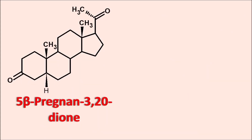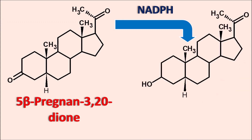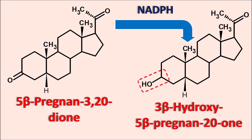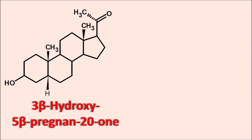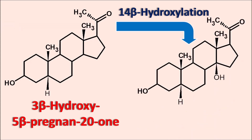The double bond is now saturated at the fourth position. The next step is reduction of the keto group at the third position. This intermediate undergoes reduction by NADPH to give a new intermediate with an OH group at the third position in beta configuration, which is 3-beta-hydroxy-5-beta-pregnan-20-one. The next modification is introduction of a hydroxyl group at the 14th position. This intermediate undergoes 14-beta-hydroxylation to form a new intermediate with an OH group at the 14th position in beta configuration.